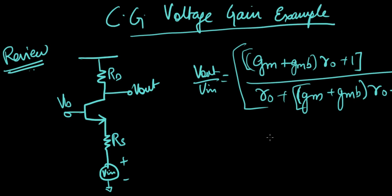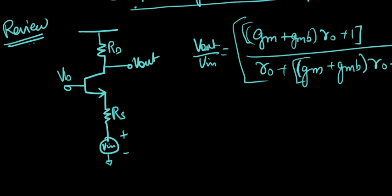Welcome back. We're going to be looking at a voltage gain calculation example in this video. I hope you watched the video on the derivation of generalized voltage gain for a common gain amplifier. So just to review, this is the circuit we had — the video's name is Common Gain Amplifier Generalized Voltage Gain. Make sure you watch that because it's a pretty long derivation, and we need to know it before we proceed with this example.